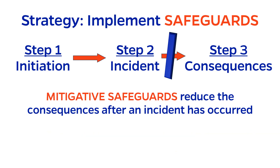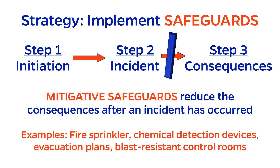A mitigative safeguard reduces the consequences of an incident after it has already occurred. Examples here include fire sprinklers, chemical detection devices, evacuation plans, and blast-resistant control rooms.